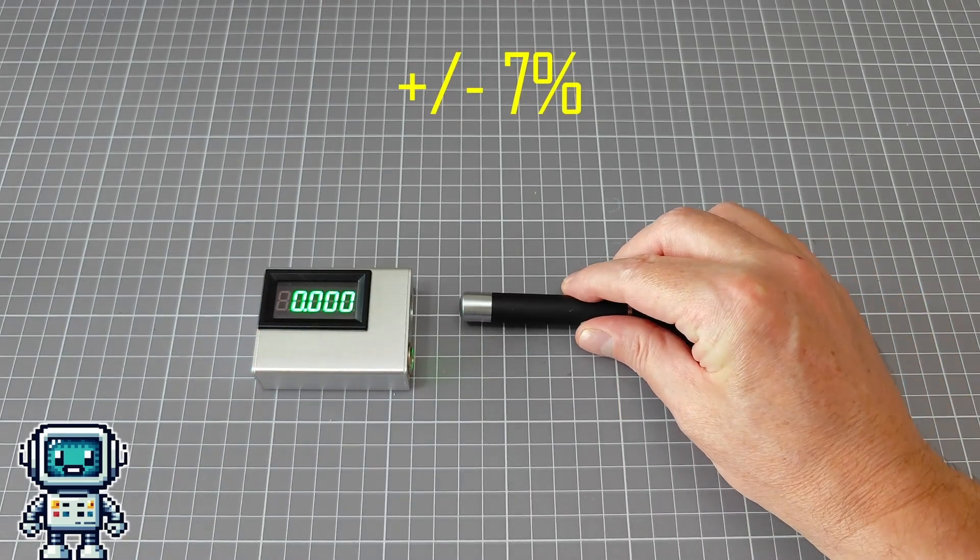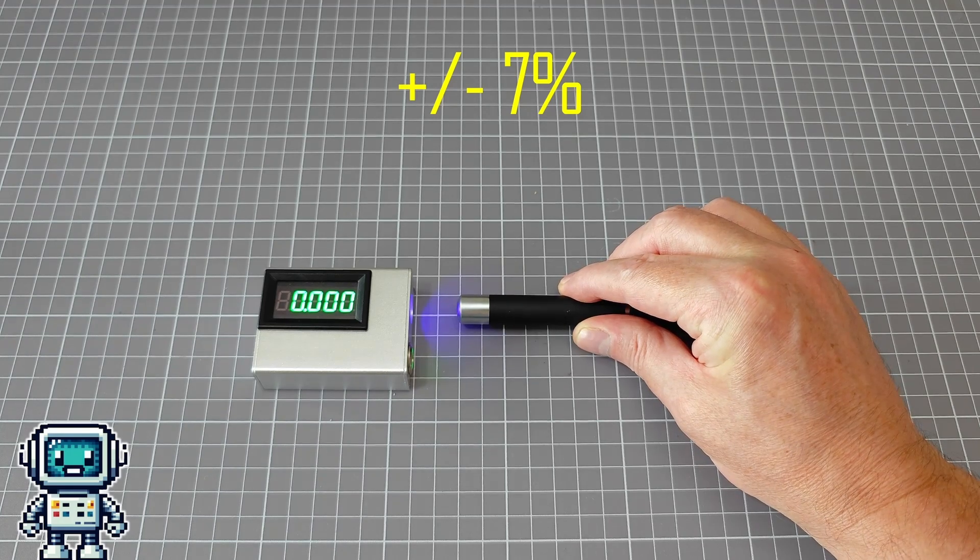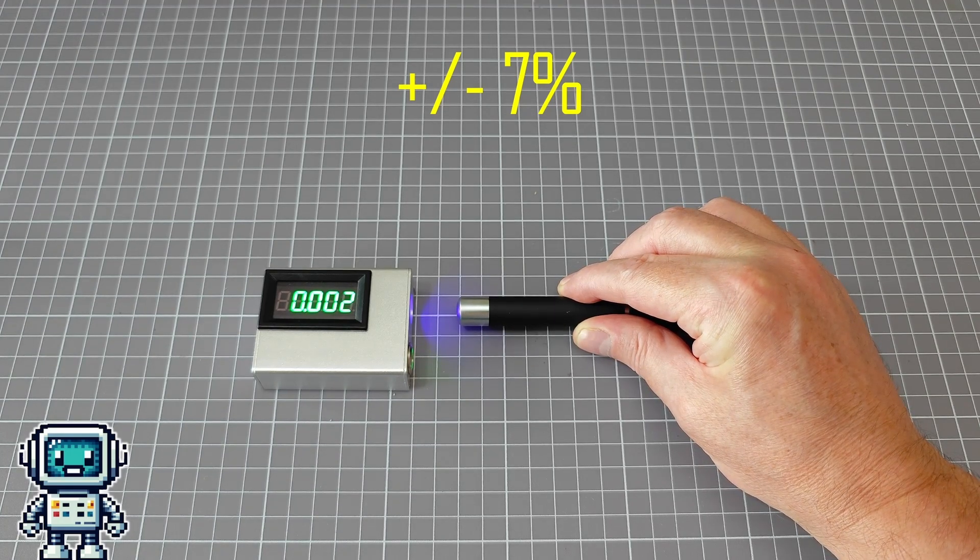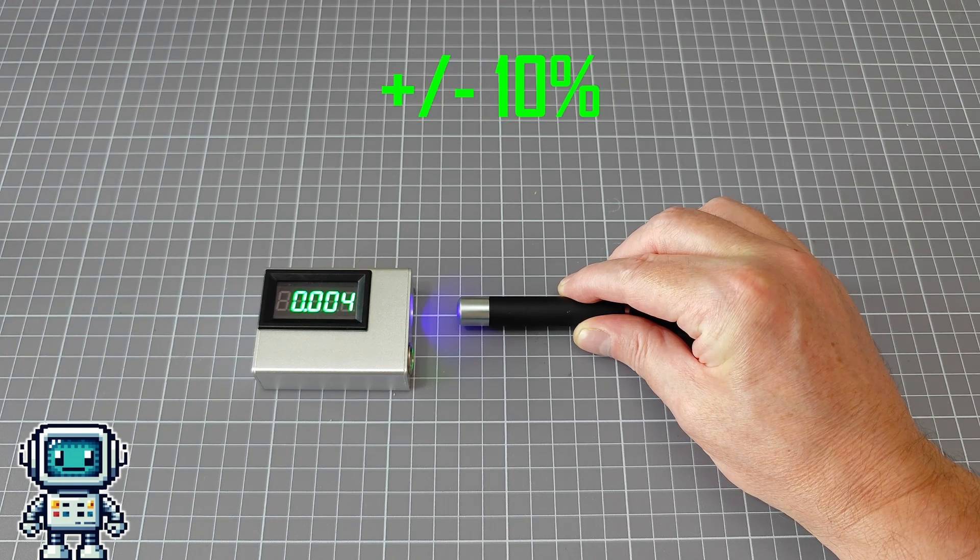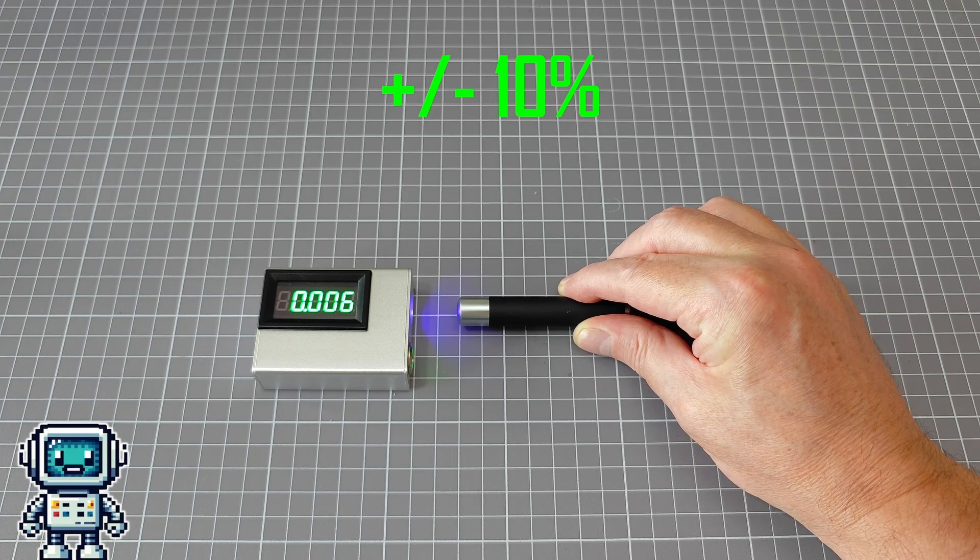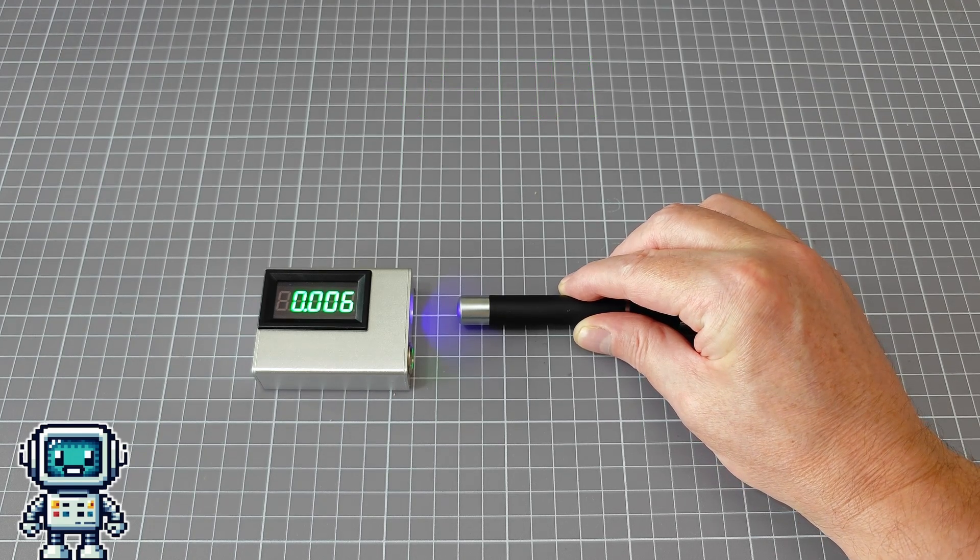If we allow for a tolerance stack up due to errors in the reference power meter, we are probably safe to assume that this is accurate to within about 10%. So whilst this is certainly no precision instrument and it is nowhere near as accurate as the 2% that it claims, it can still be a very useful device.